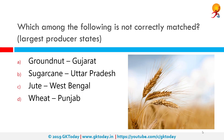Which of the following is not correctly matched? We are matching largest producers to states. Groundnut to Gujarat is correct. Sugarcane to Uttar Pradesh is also correct. Jute to West Bengal is also correct. However, wheat to Punjab is not correct — the maximum quantity of wheat is in fact produced by Uttar Pradesh, followed by Punjab and Haryana. Together they grow 80% of India's wheat.